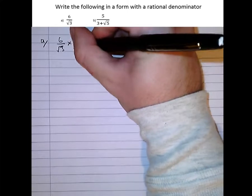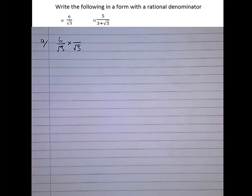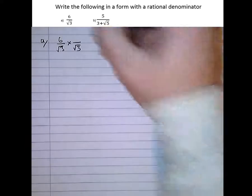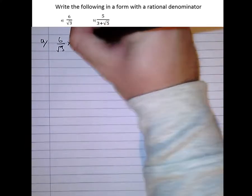The way we do this, times the bottom by itself to get a nice whole number on the bottom. But because we've done it at the bottom, we must do it at the top as well.